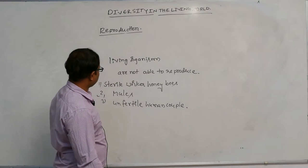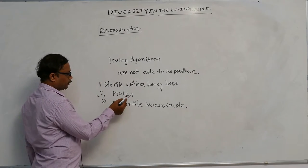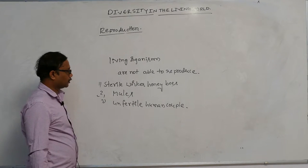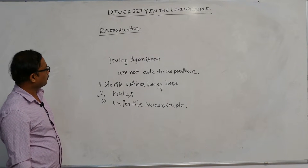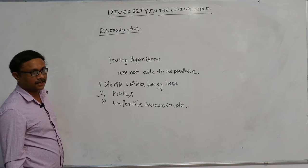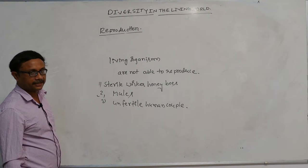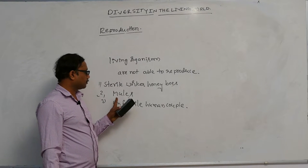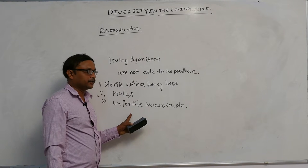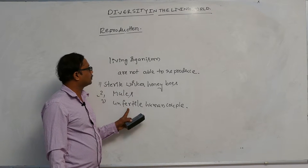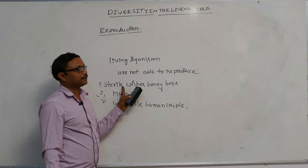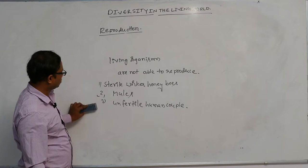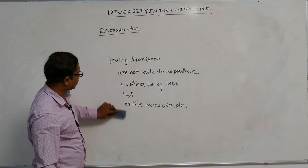Sterile worker honey bees, mules, and infertile human couples cannot reproduce. That's why reproduction is not a defining living character — because some living organisms are not able to reproduce.